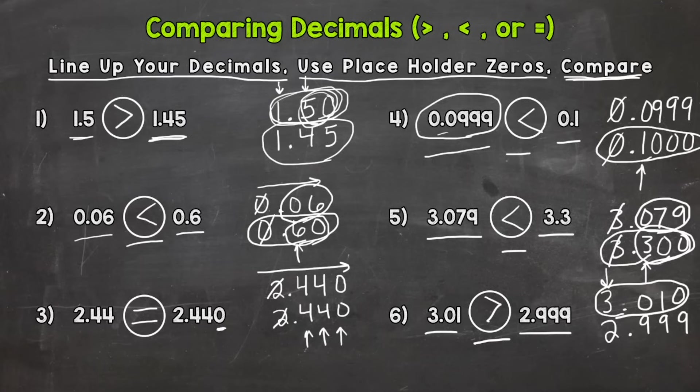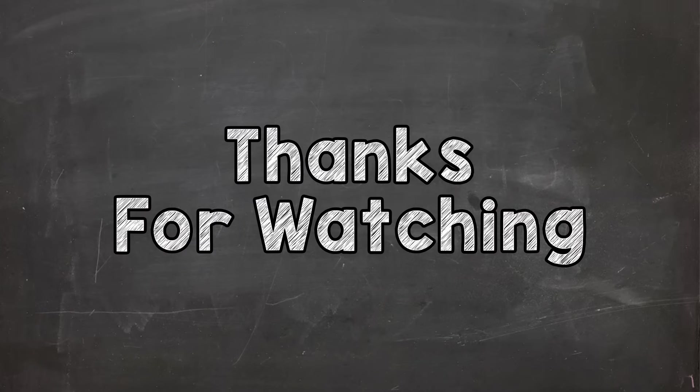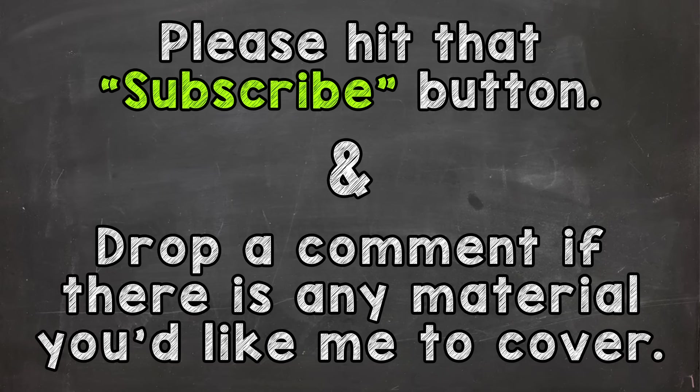So there you have it — that's how you compare two decimals. Line your decimals up, use those placeholder zeros, and then compare from left to right. Make sure you have the comparison correct. Thanks a lot for watching, I hope that was helpful, and until next time — peace.